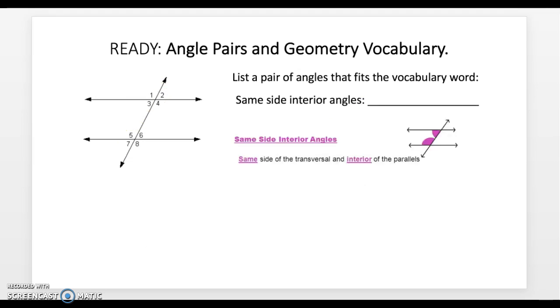Same side interior angles are the same side of the transversal and interior of the parallels. So we're talking about 3 and 5 and 4 and 6.